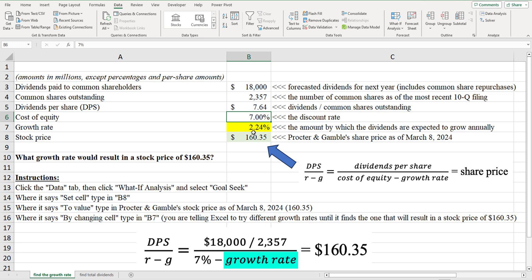In our formula here, the growth rate that would result in a share price of $160.35, which is the share price we're observing as the most recent time that I'm making this video, is 2.24%. So the market must be assuming a growth rate of 2.24% of dividends, assuming that we get to the share price.